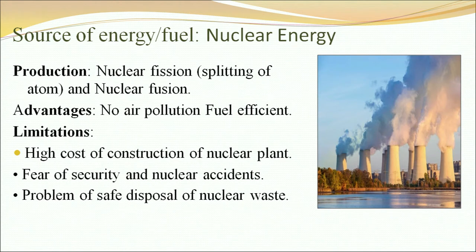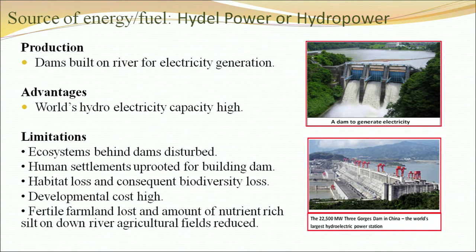Nuclear energy's advantage is no air pollution and fuel efficiency. Limitations are high cost of construction of nuclear plants, fear of security and nuclear accidents, and problems of safe disposal of nuclear waste. Next is hydel power or hydel energy, produced by dams built on rivers for electricity generation. Its advantage is high hydroelectricity capacity. Limitations are: ecosystems behind dams disturbed, human settlements uprooted for building dams, habitat loss and consequent biodiversity loss, and high developmental cost.